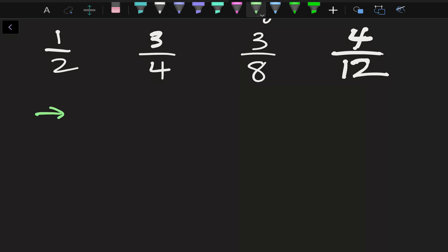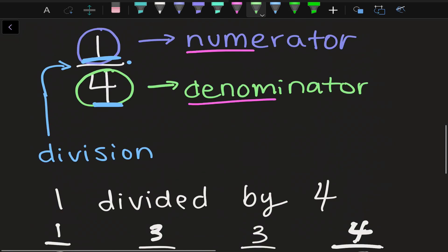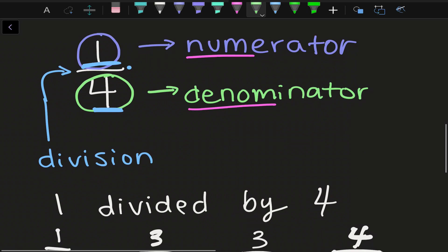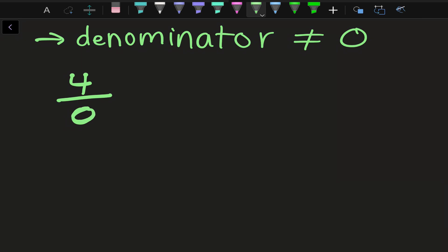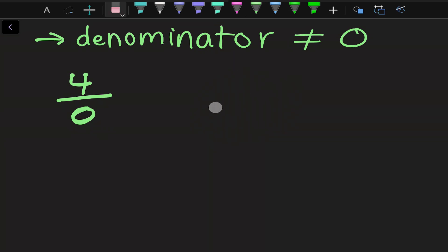Now a couple of things to remember. Our denominator cannot equal zero. That would be saying something like four divided by zero. The bottom number describes how many pieces the whole item has been divided into. If the denominator equals zero, we're saying a whole pizza hasn't been divided into any pieces. But if I didn't cut a pizza at all, I still have one piece — I can't have zero pieces. That's why we can't have a denominator of zero.